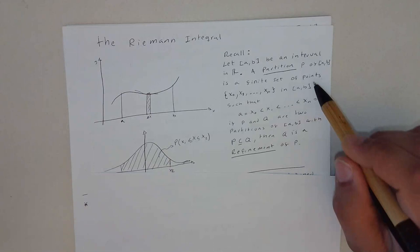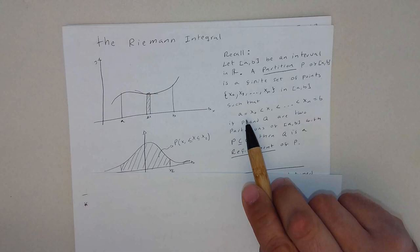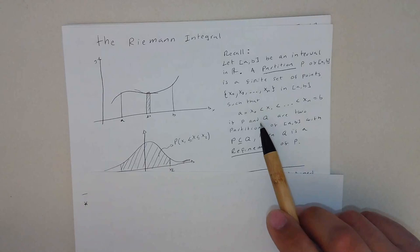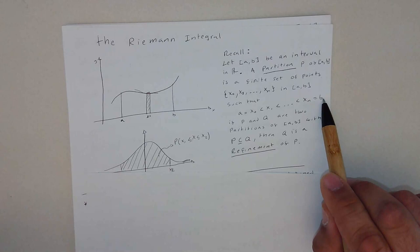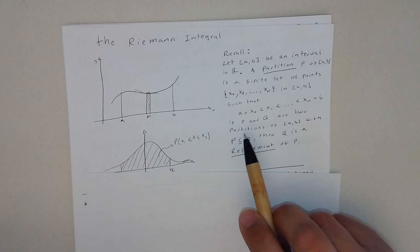We have this finite set of points such that the first one basically will correspond to a, to one of the extreme left, and it will go all the way to the last point which will be exactly the other extreme of the interval.